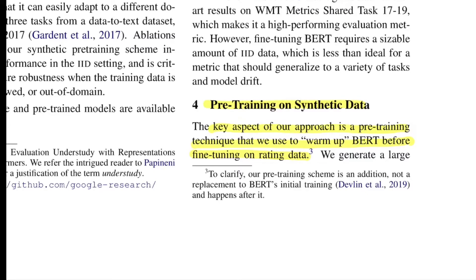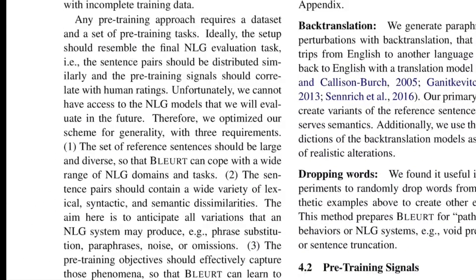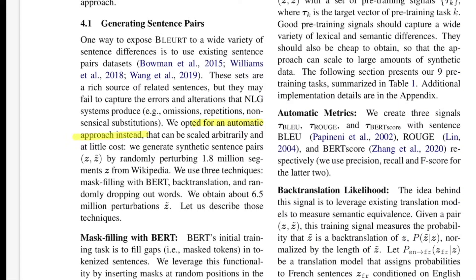Post pre-training, one can use the supervised dataset and tune it to the respective problem. The authors opt for an automatic approach for generating synthetic sentence pairs by randomly perturbing 1.8 million segments from Wikipedia. They talk about three techniques: mask filling with BERT, back translation, and randomly dropping out words, resulting in a total of 6.5 million perturbations.